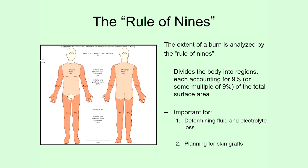With that in mind, if somebody comes in with third degree burns on the anterior trunk and the anterior right arm, you quickly add those numbers up: 18 plus 4.5 percent is 22.5 percent. If you also had burns on the posterior right arm — another 4.5 percent — you'd have third degree burns over 27 percent of the body. It's a quick, simple way to add these up and get an indication of where a burn victim stands when they come in.